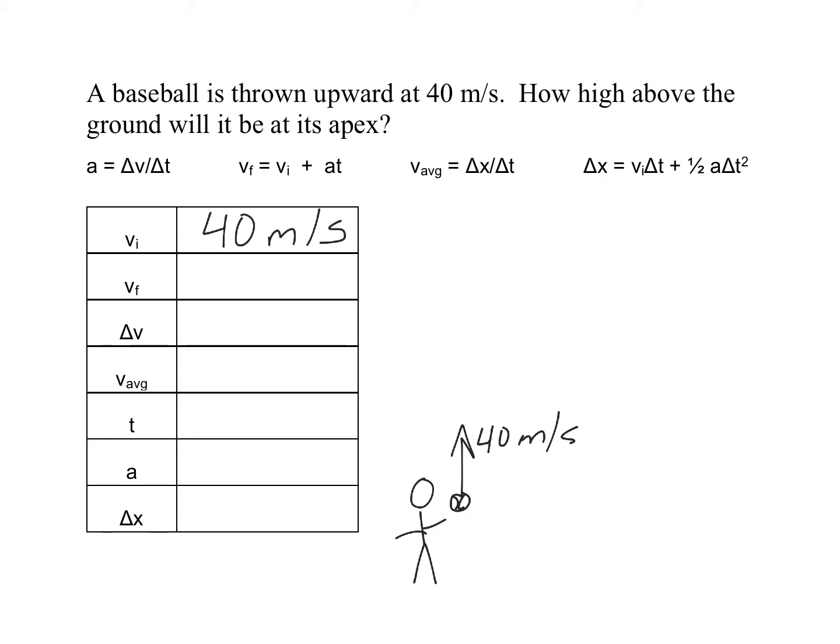So the ball is going up, but remember that gravity is causing things to accelerate downward always. So we always want to start by writing down vi and a. So vi is 40, the acceleration is in the opposite direction, so it must be negative 10 meters per second squared.